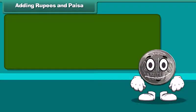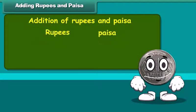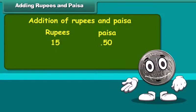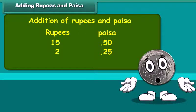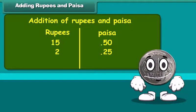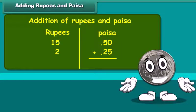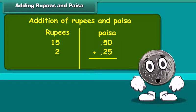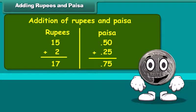Adding rupees and paisa. Let us learn addition of rupees and paisa. Add 15 rupees 50 paisa and 2 rupees 25 paisa. Write the amount in two separate columns of rupees and paisa. 50 plus 25 paisa is equal to 75 paisa. Now add numbers in rupees column: 15 plus 2 is 17. Therefore, the sum is 17 rupees and 75 paisa.